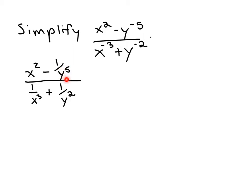So the least common denominator of y to the fifth, x cubed, and y squared. To get that least common denominator, we want to include all the factors of each of those denominators. I see x cubed, so we know we need a factor of x cubed.